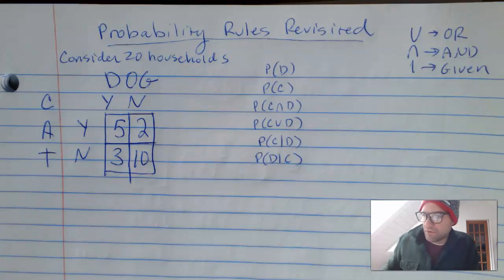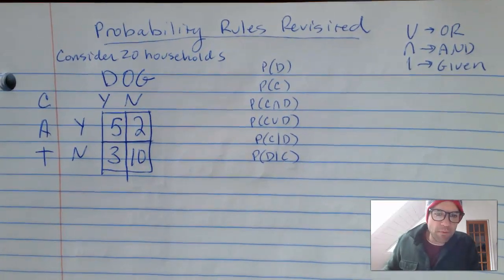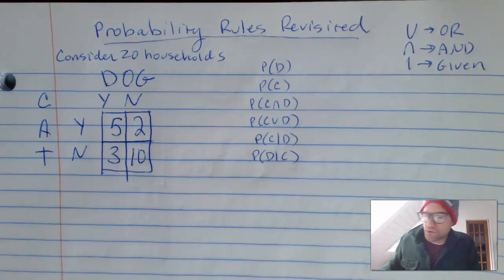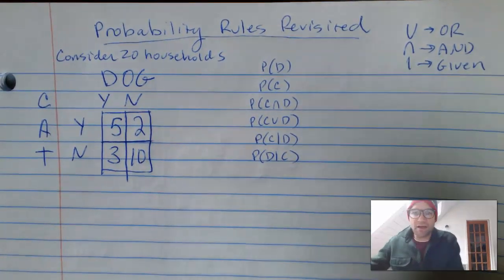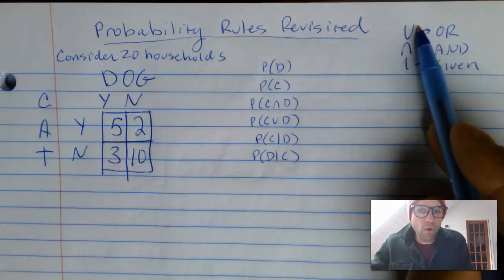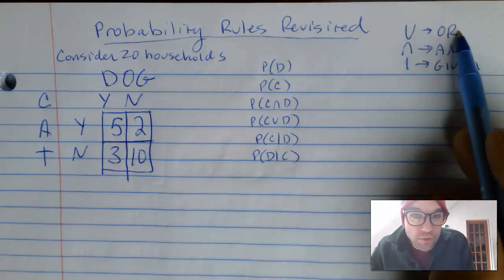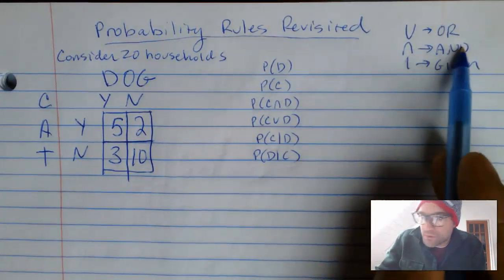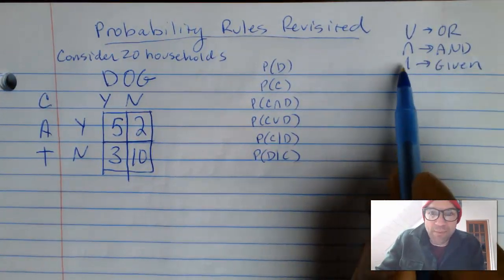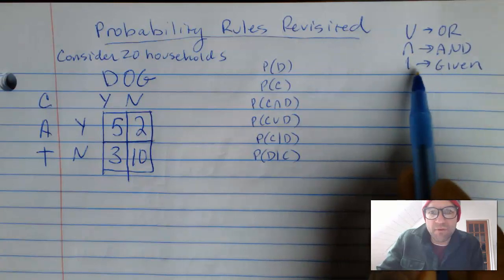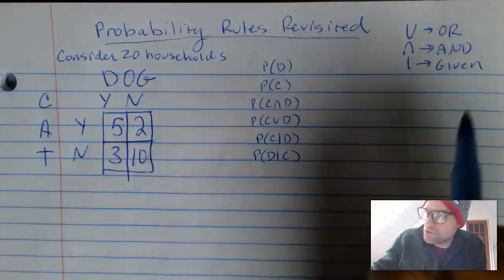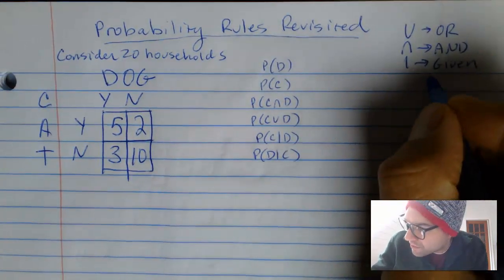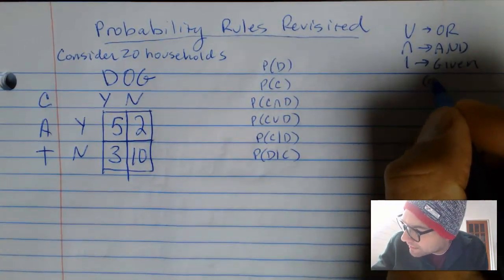We're just going to revisit these probability rules again. We're going to talk about 'or', which is a union; 'and', which is the overlap; and given information — this is when you change the denominator.